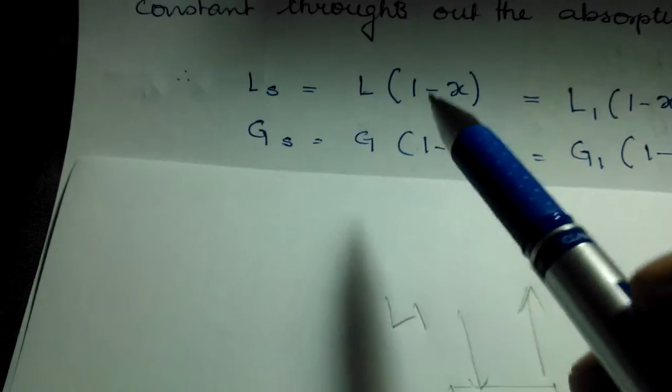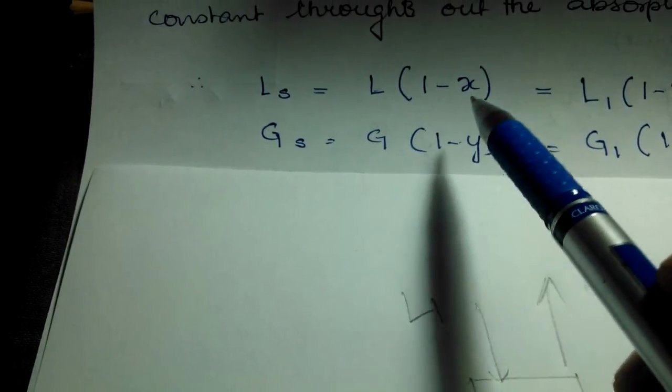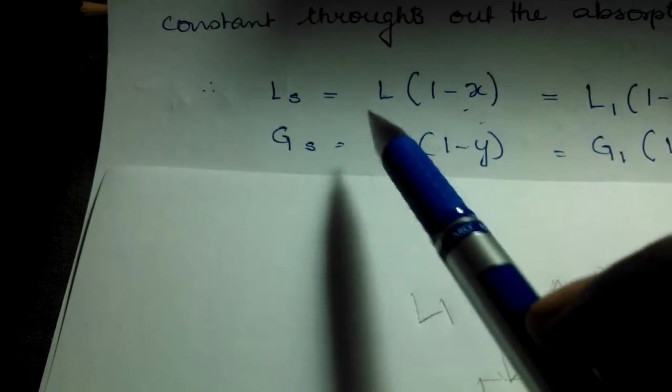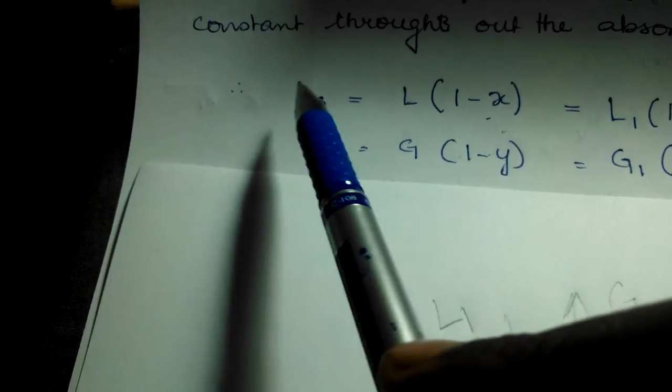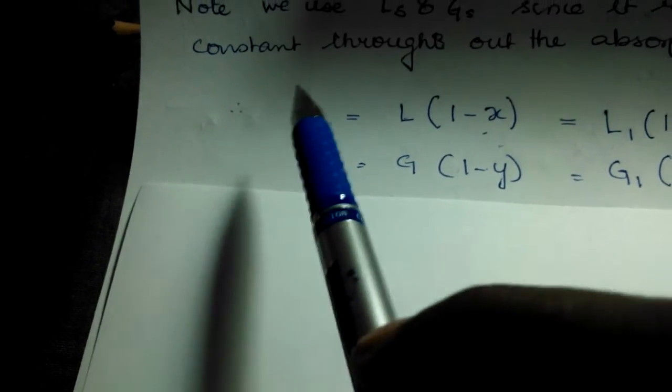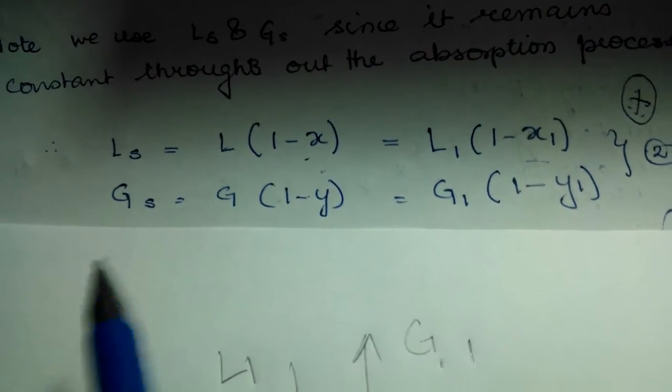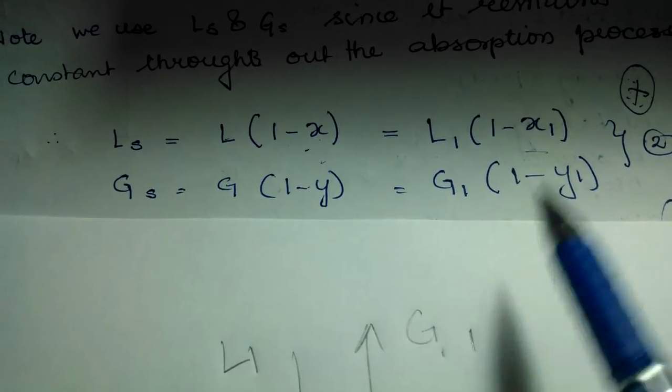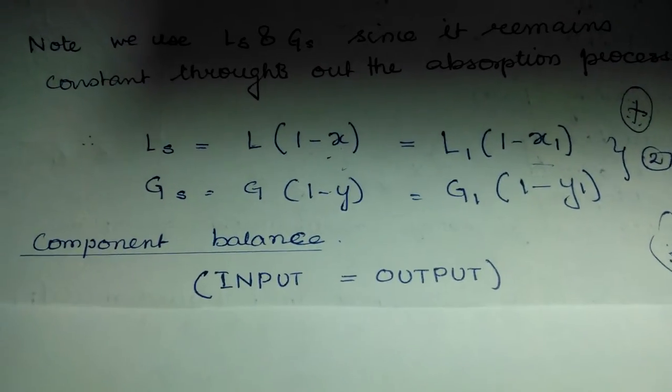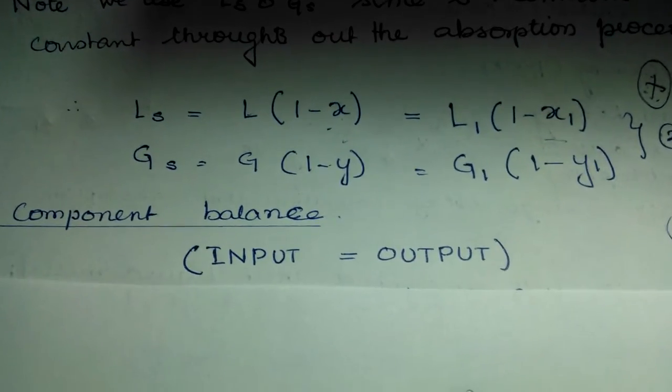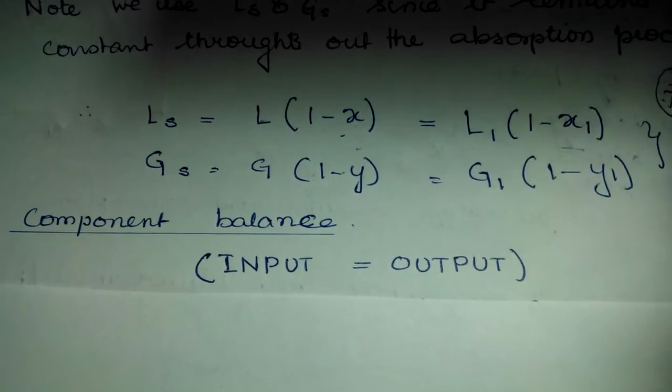L, if it was LS, would be the amount unreacted. So 1 minus X is the unreactive fraction, and when I multiply by the total, we get the amount of unreactive gas. Since the unreactive gas is constant, this equation gives the same answer. Similarly, this equation is built on the same concept. Now we go to component balance, which is when you consider the moles or amount of moles.